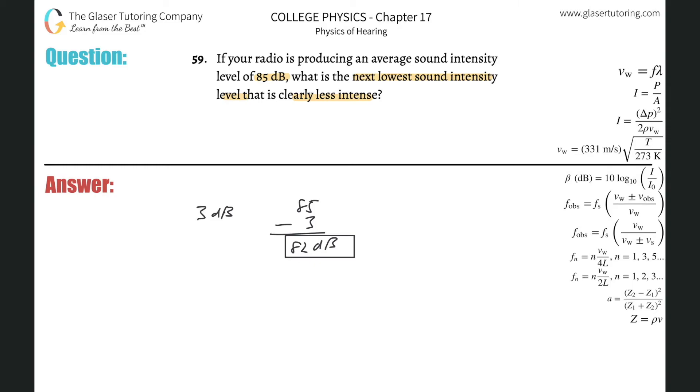About 3 decibels is the point of demarcation between that which we can clearly tell is less intense and that which we can't clearly tell is less intense.